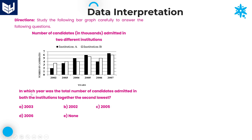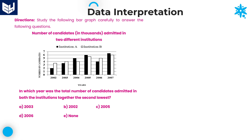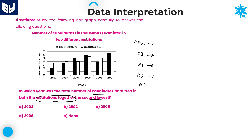Let us look at the second question: in which year was the total number of candidates admitted in both institutes together the second lowest? We need to look at 2002, 2003, 2004, 2005, 2006, and 2007, and calculate A plus B combined for each year. First, write all the values for A and B.